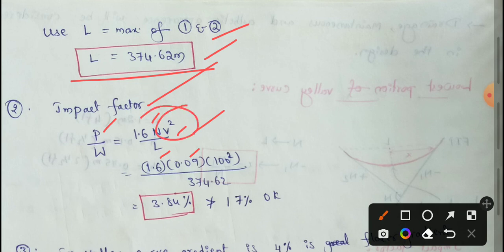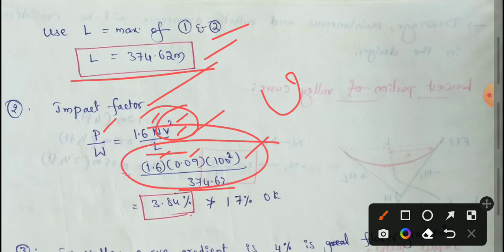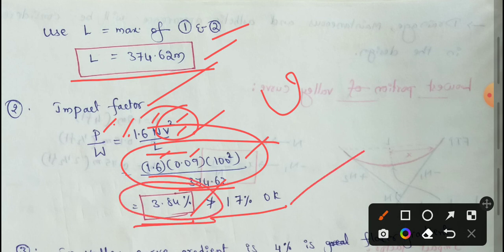Using the HSD criteria with V = 100 km/h and applying the formula V² / L, we get L = 374.62 m. The impact factor value is calculated as 3.84%. As per IRC, the permissible impact factor value is 17%. Since 3.84% is less than 17%, this value is acceptable.